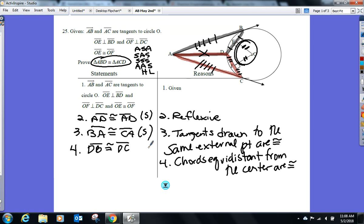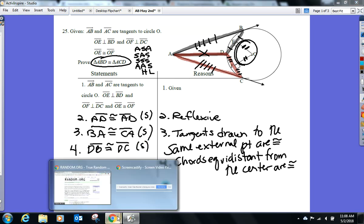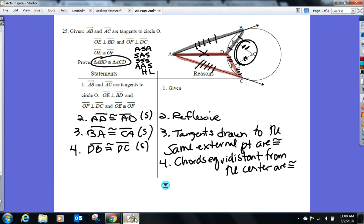DE congruent to DC. Chords equidistant from the center are congruent. And that looks like to give me enough information to prove the triangles congruent by what method? SSS. You got it. All right.